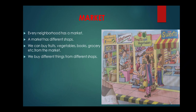The next place is a market. Every neighborhood has a market. A market has different shops. We can buy fruits, vegetables, books, groceries, etc. from the market. We buy different things from different shops.